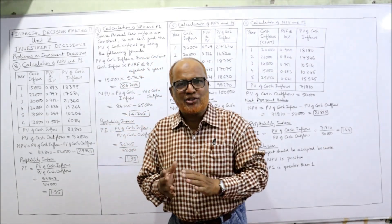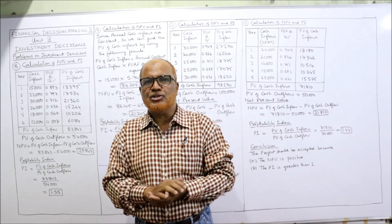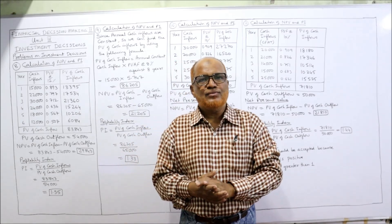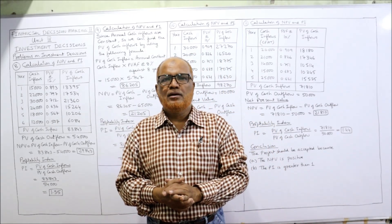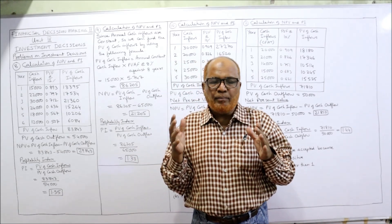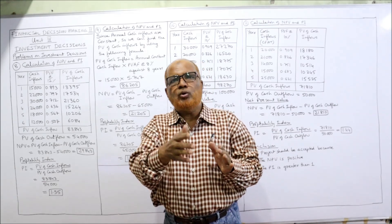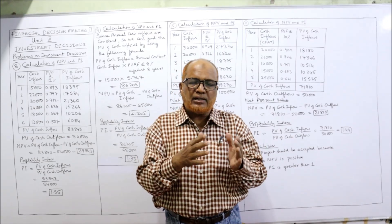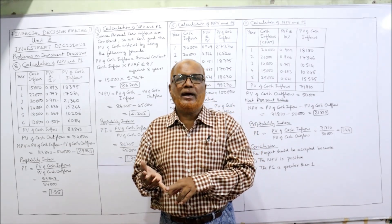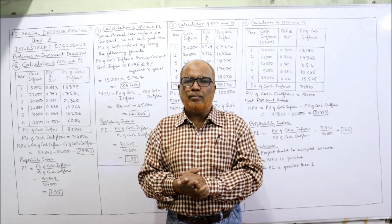Hello viewers, welcome to my channel. I'm Hashem Ali Khan. Seven problems have already been completed on capital budgeting investment decisions, which is the fourth unit in financial decision making. There are different techniques for evaluation of capital budgeting proposals — whether to invest in a capital project or not. Traditional techniques are payback period and ARR (average rate of return), and modern techniques are NPV, profitability index (PI), and IRR.